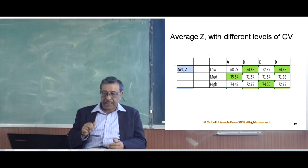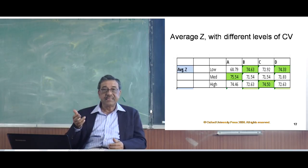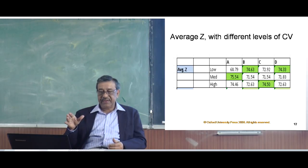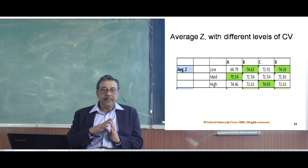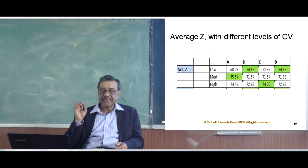For the b column, when b is low that yields the maximum average z of 74.63. For c, the maximum is 74.5, which is the maximum in column c. And 74.33 is the maximum in column d. This tells me that my optimal result of z will come when I keep a as medium, b as low, c as high and d as low.